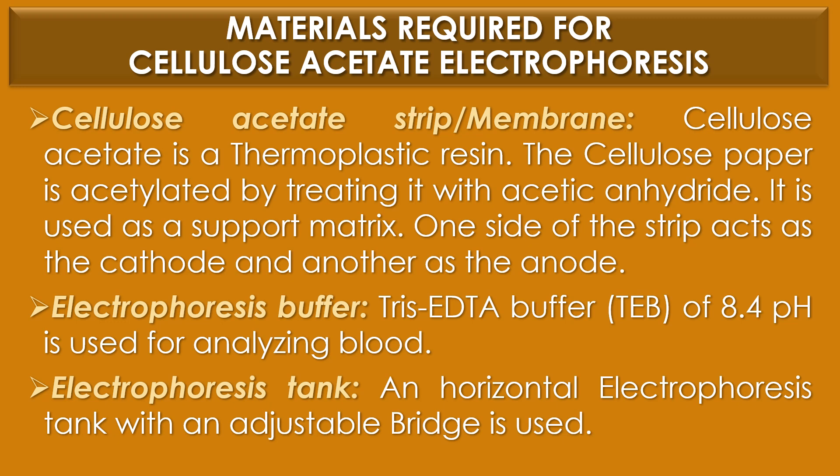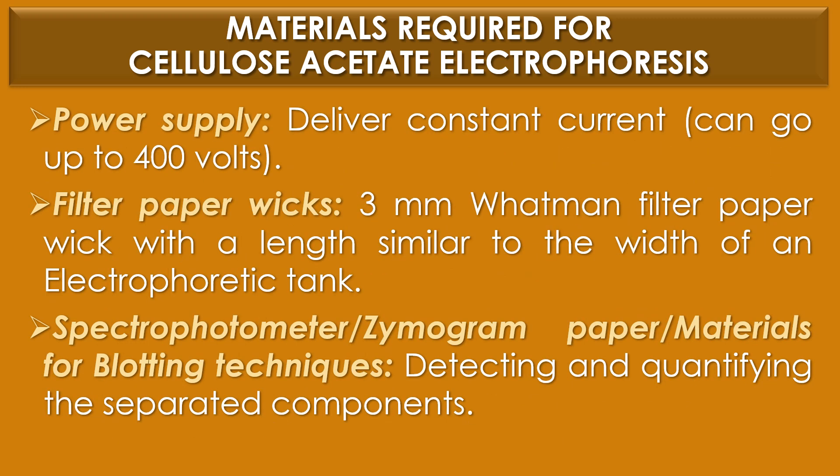The second material is the electrophoresis buffer. Tris-EDTA buffer at a pH of 8.4 is usually used for analyzing blood. The third material is the electrophoresis tank — a horizontal electrophoresis tank with an adjustable bridge is used. The fourth material is the power supply, which can deliver constant current up to 400 V.